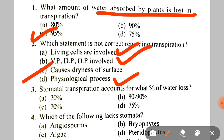Next question: stomatal transpiration accounts for what percent of water loss? A. 20%, B. 80-90%, C. 70%, D. 75%. The correct answer is B — 80-90%.